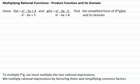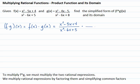To multiply f times g of x and find the equation of the product function, we need to multiply the expression f times the expression g of x. The rational expression for f is x squared minus 5x plus 4 over x squared minus 6x plus 5, times x squared minus 4x minus 5 over x squared minus 6x plus 8.